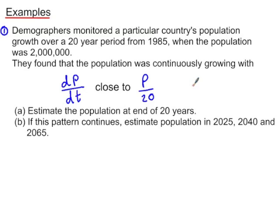We'll work through some examples which make use of this result. So firstly, we're looking at population over a 20-year period from 1985 when we're told that the population was 2 million. We're then told that the population was continuously growing and that we've got dp/dt close to p over 20.